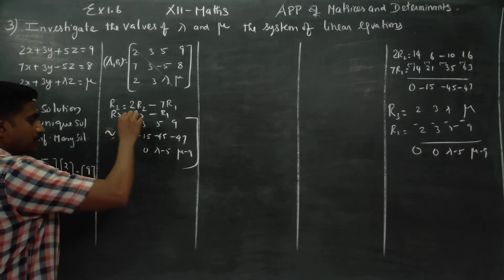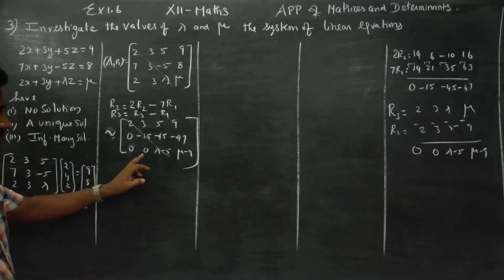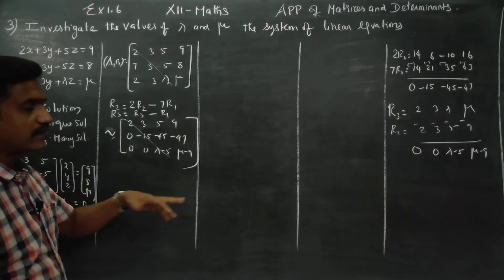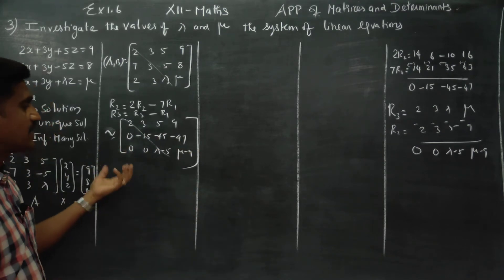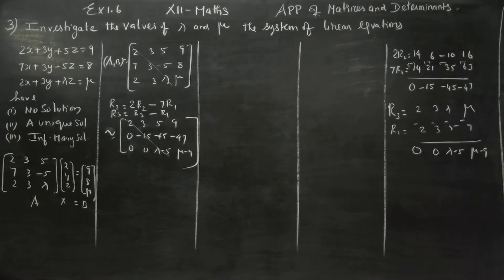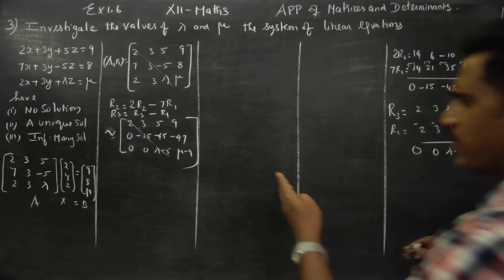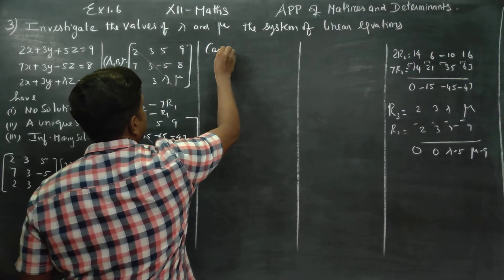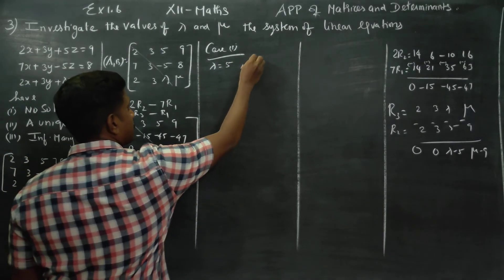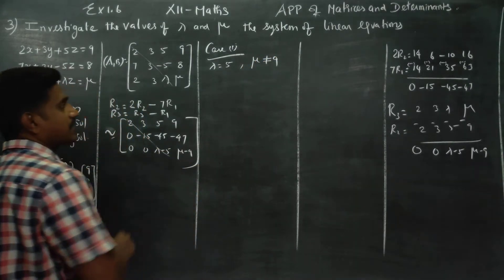The last echelon form matrix has principal diagonal entries and zeros, so the row reduction process is over. Now we identify the line with lambda value and mu value — non-zero lines versus zero lines — to investigate different cases. Case 1: no solution — lambda is 5, mu is not 9.